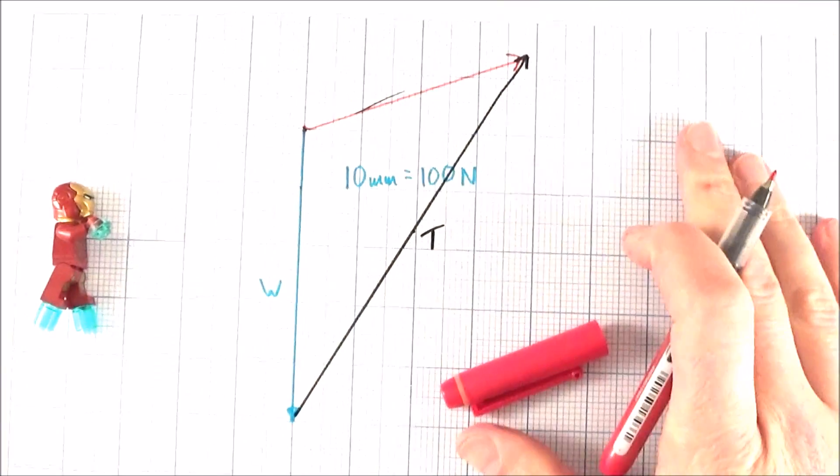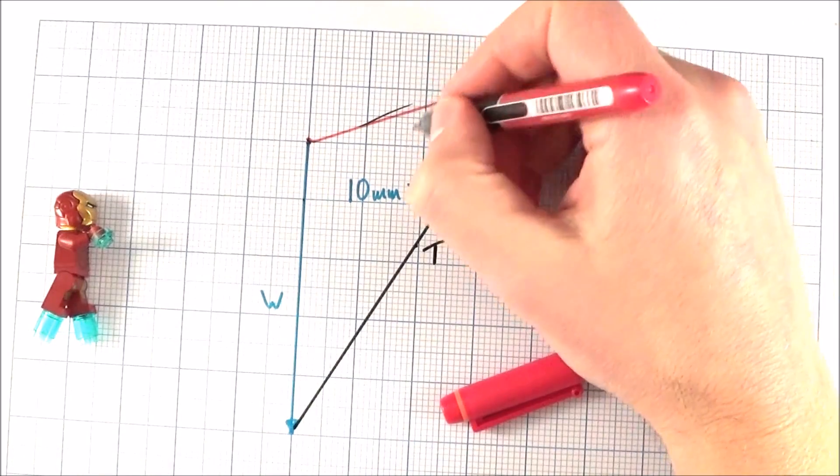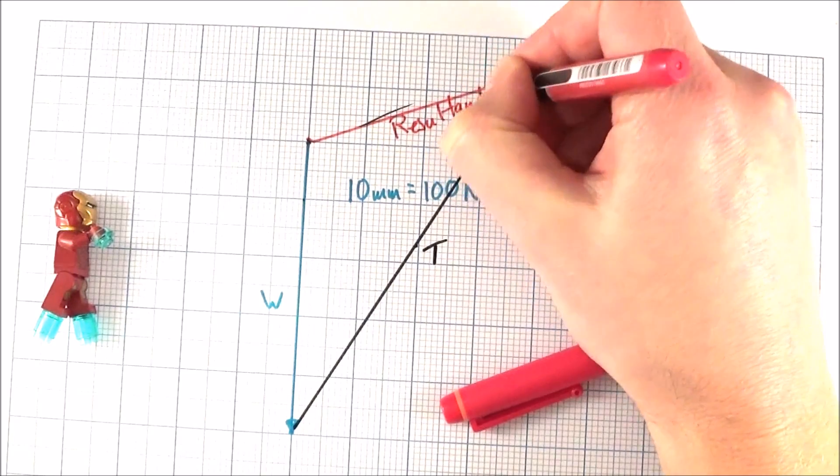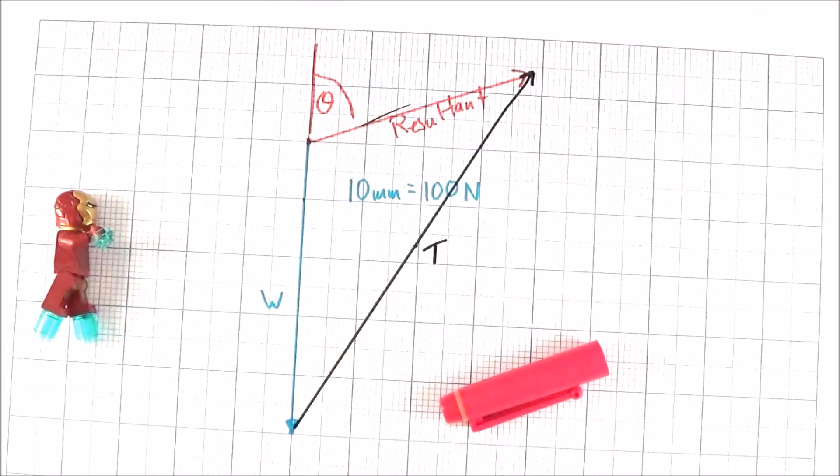Now the good thing about this is it's fairly quick, but what we can do now is we can measure the size of this here and that will give us our resultant. We can also measure an angle, and I'm going to say the angle from upright.